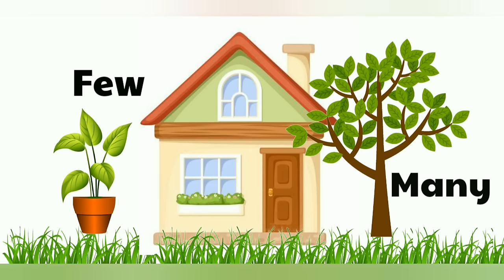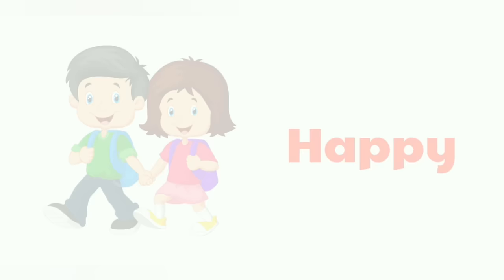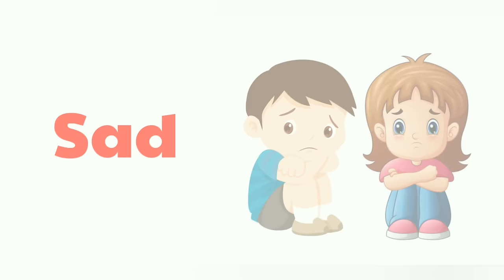Few and many. There are few leaves in a sapling. There are many leaves in a tree. Happy and sad. These children are happy. These children are sad.